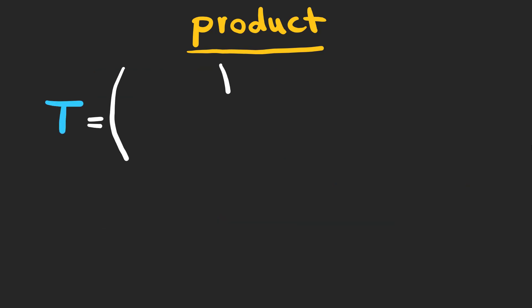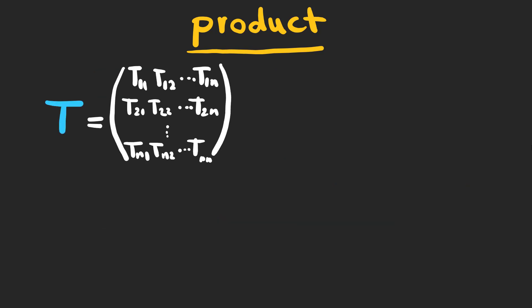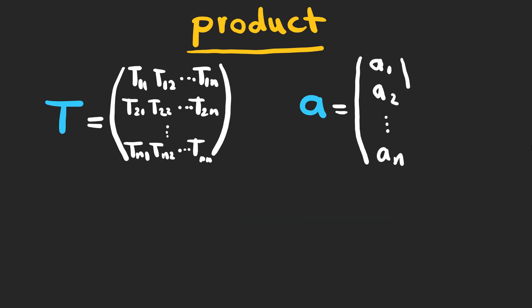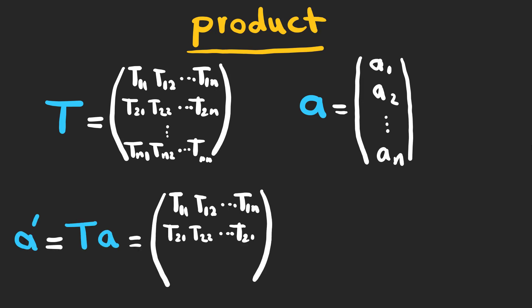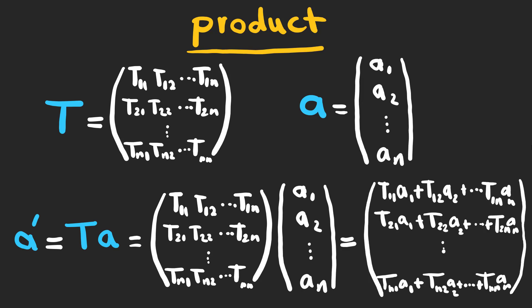We can also multiply a square matrix like T with a rectangular matrix like A, which represents a column vector. Just take rows of T and columns of A, multiply corresponding elements, and add. Note that two matrices can be multiplied only if the number of columns in the first equals the number of rows in the second.